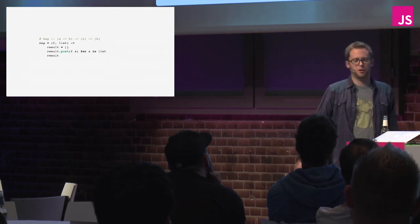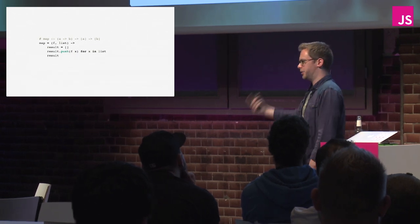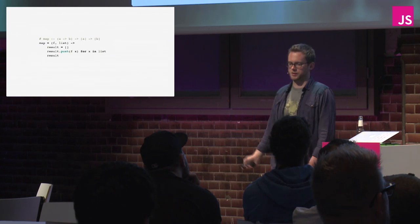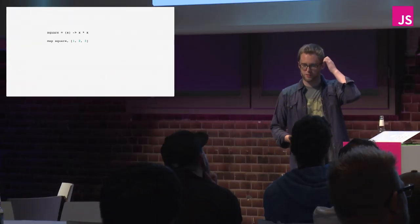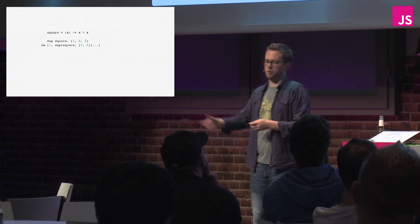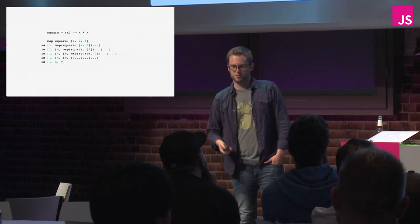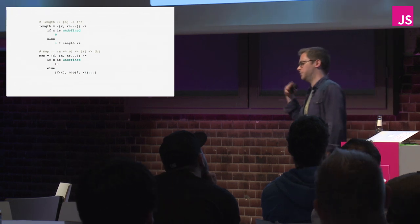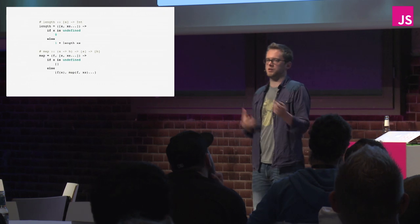Map takes a function from A to B and a list of A's, returning a list of B's. The imperative version makes an empty list and pushes f(x) for every element. The functional version: if there's no first element return an empty list, otherwise apply f to the first element and combine with map over the rest. We do that recursively — square of 1 is 1, pull it out front, map over what's left — until we have map of an empty list which is empty. These functional solutions work by giving you an expression you can substitute recursively, not by mutating state.